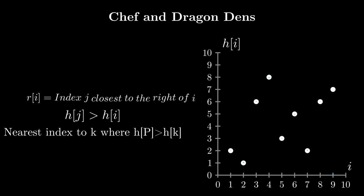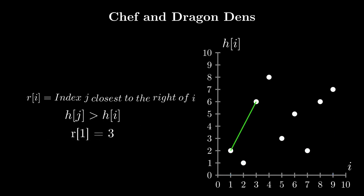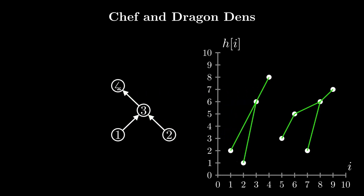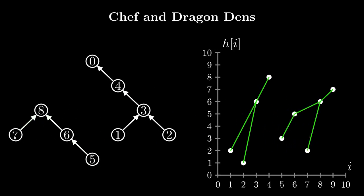Let's look at how this looks on our graph. r[1] equals 3, as that's the closest index to its right with a height greater than h[1]. r[2] equals 3, and r[3] equals 4. We set r[4] to 0 as there is no point to its right with a greater height. We can travel from r[i] to i, so looking at this backwards, we can convert this into a directed tree with all edges pointing towards the root — meaning directed edges from node i to r[i]. This tree has n edges with node 0 as the root.